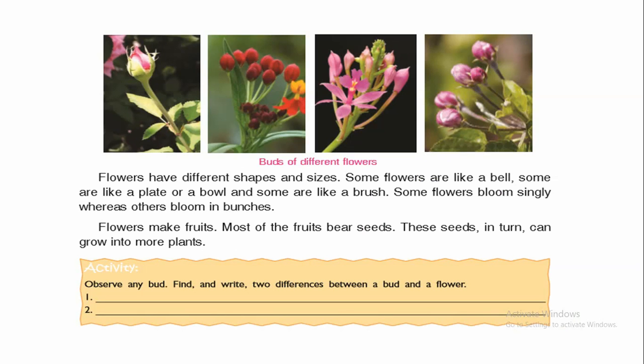Flowers make fruit, and most fruits bear seeds. These seeds in turn can grow into more plants. So children, flowers make fruit, and most fruits have seeds which are further used for germination of new plants.